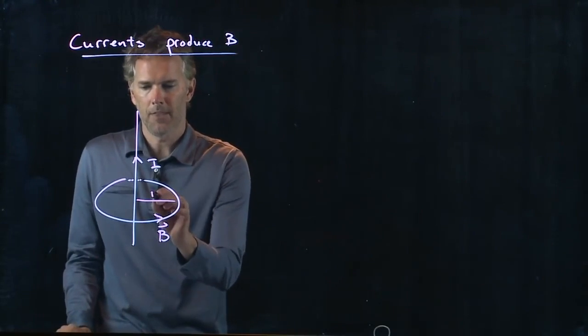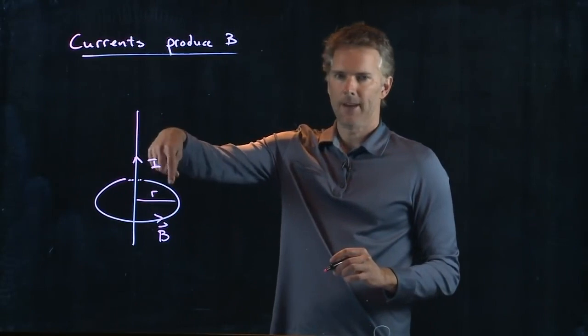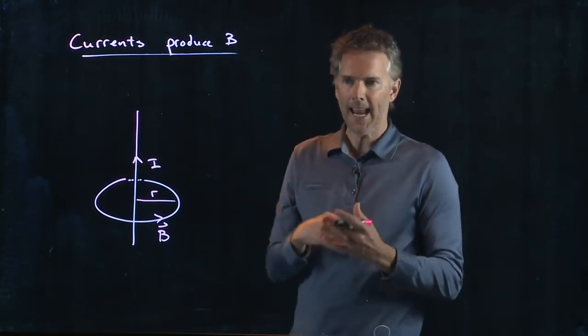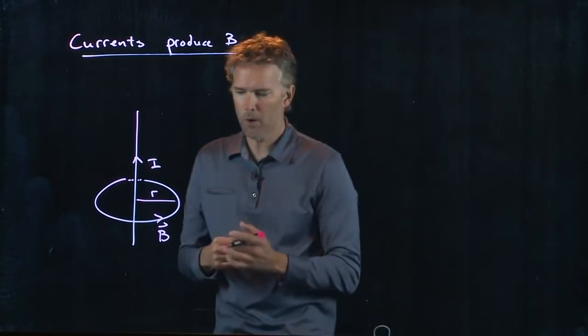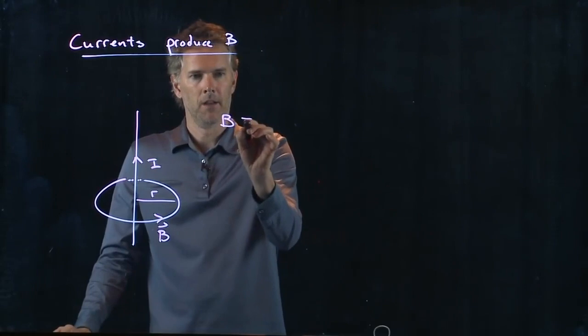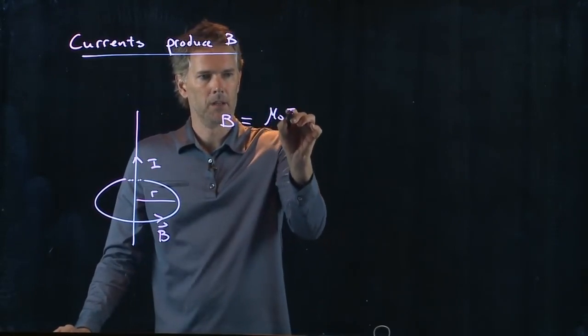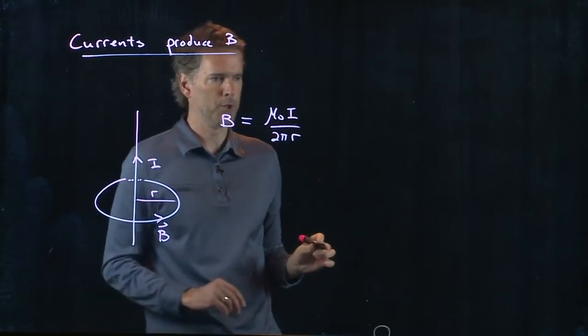Now if that thing is making a circle, then the B-field has to have the same strength at any radius from the line. And we know what that strength is. We talked about it yesterday. The strength of B is mu-naught I over 2 pi r.